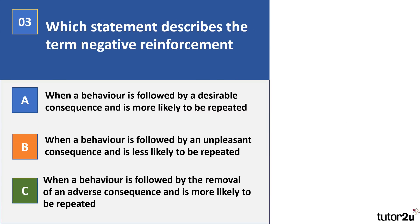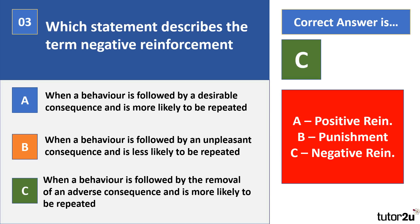Question 3: which statement describes the term negative reinforcement? If you want an extra challenge, think about what the other statements describe too. The correct answer is C. A was positive reinforcement, B was punishment, and C is negative reinforcement. Positive reinforcement and negative reinforcement both increase the likelihood of a behaviour reoccurring, whereas punishment decreases it. Students often pick B for negative reinforcement, incorrectly assuming the 'negative' means punishment.